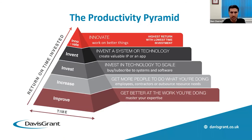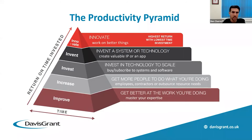Step two is then taking it to the next level — increasing the number of people doing the work in your business, either by employing people or contractors, to help free up more time to move up the pyramid. Remember, your team will need to know how to use existing technology and systems, and those systems need to be in place for the team to be able to use them.